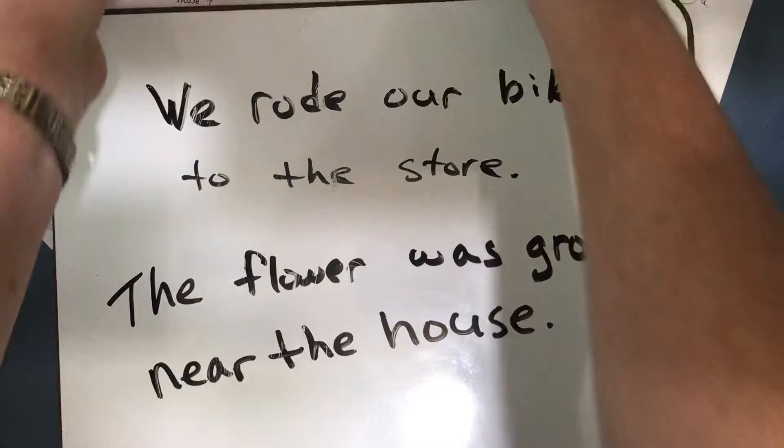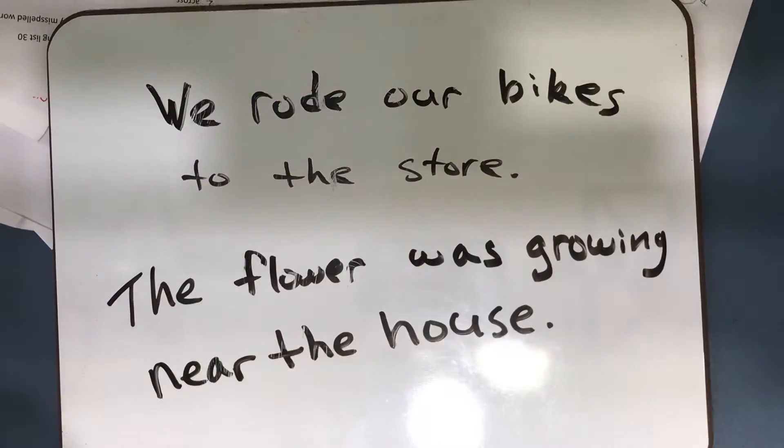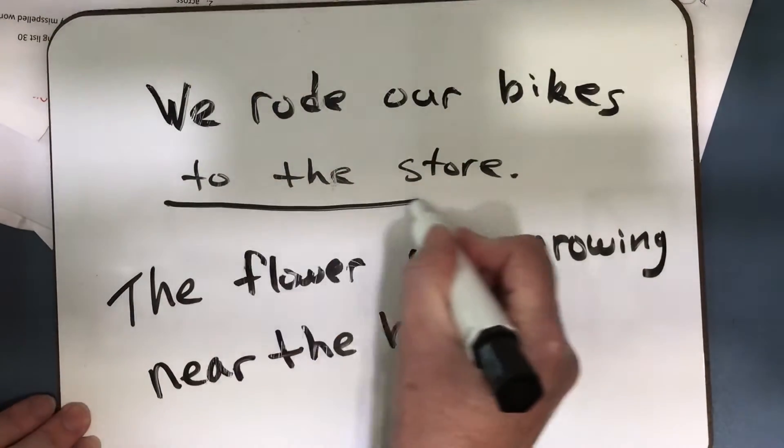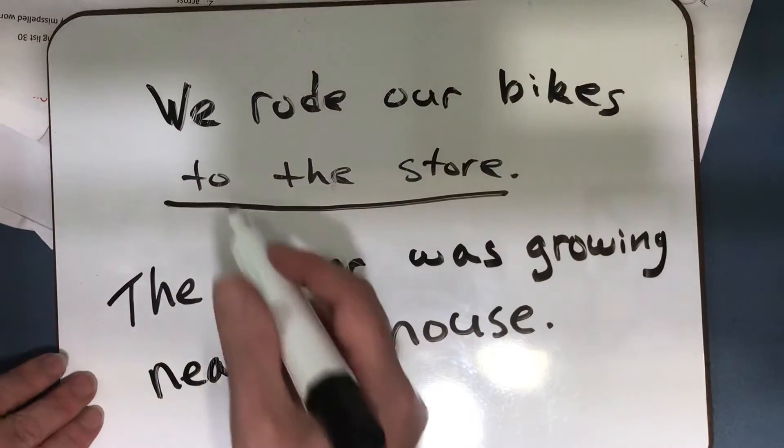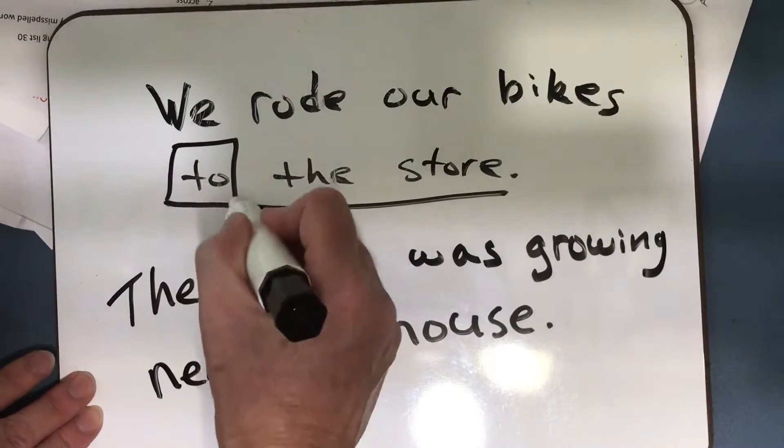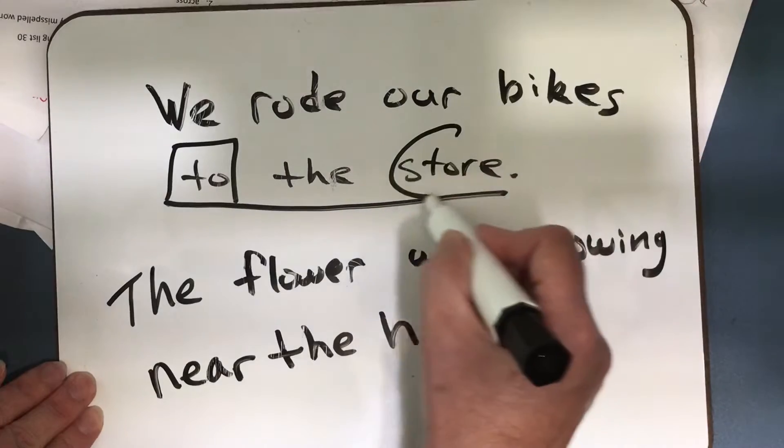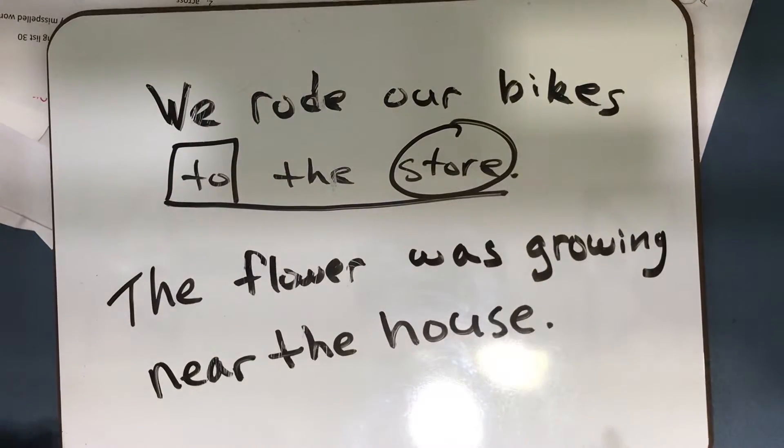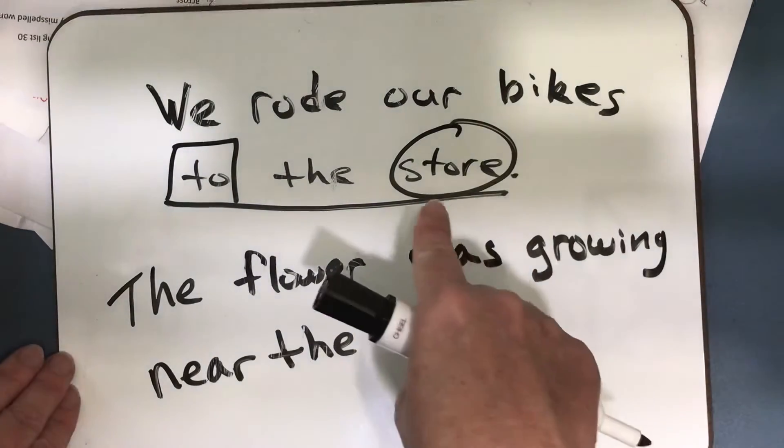I've written two sentences here. We rode our bikes to the store. To the store is the prepositional phrase. The preposition is to, and store is the object of the preposition. The prepositional phrase always ends with a noun.